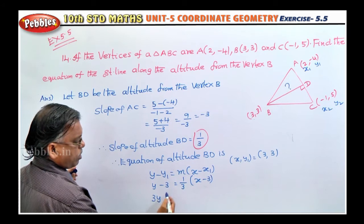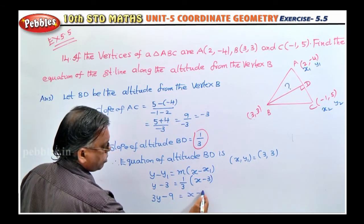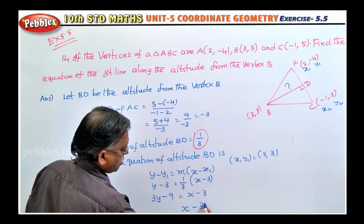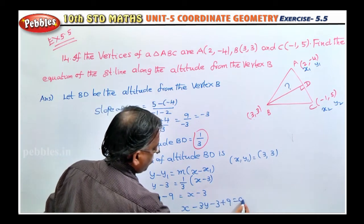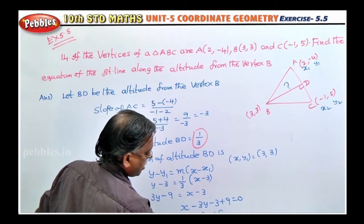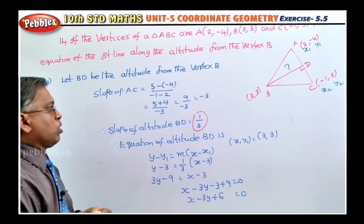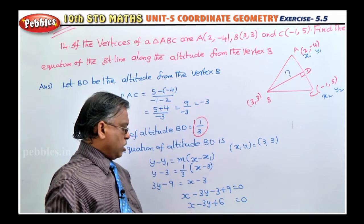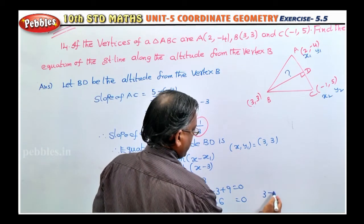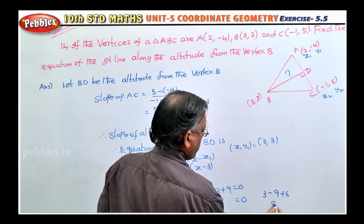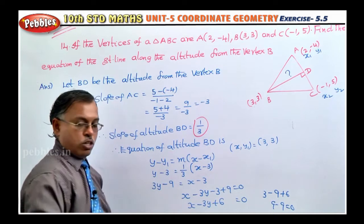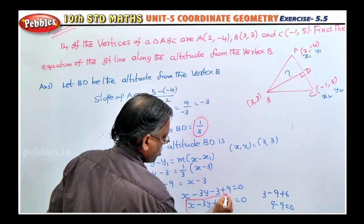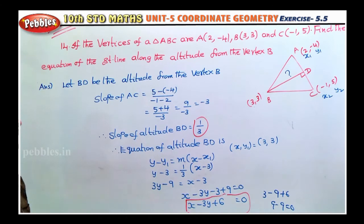Cross multiplying: 3y - 9 = x - 3. Rearranging: x - 3y - 3 + 9 = 0, which gives x - 3y + 6 = 0. To verify, substitute B(3, 3): 3 - 3(3) + 6 = 3 - 9 + 6 = 0. Correct! So the equation of the required altitude is x - 3y + 6 = 0.